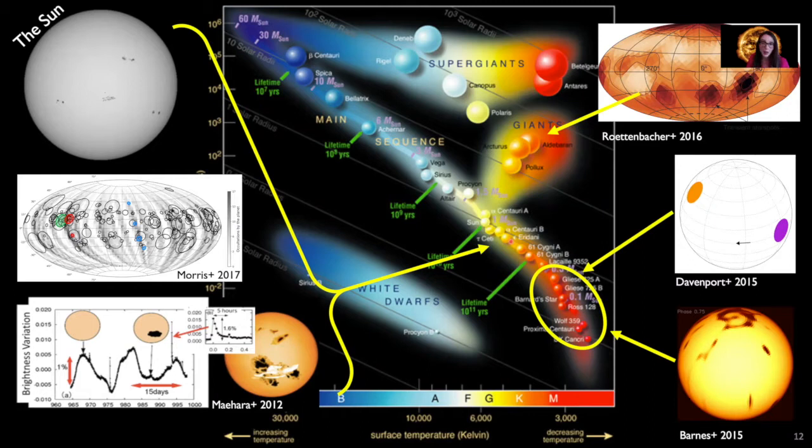Here's our Hertzsprung-Russell diagram again, and I've highlighted portions of the HR diagram where we have observed stars with spots. All of these images that you see here are taken from academic journal article papers that I've read as part of my research. So here's our sun, and these two stars here are all solar type stars about the same size, mass, luminosity as the sun, and these stars all have spots on their surfaces as well.